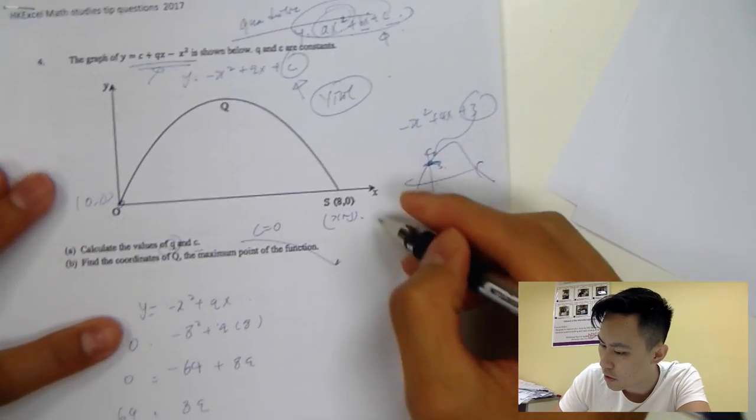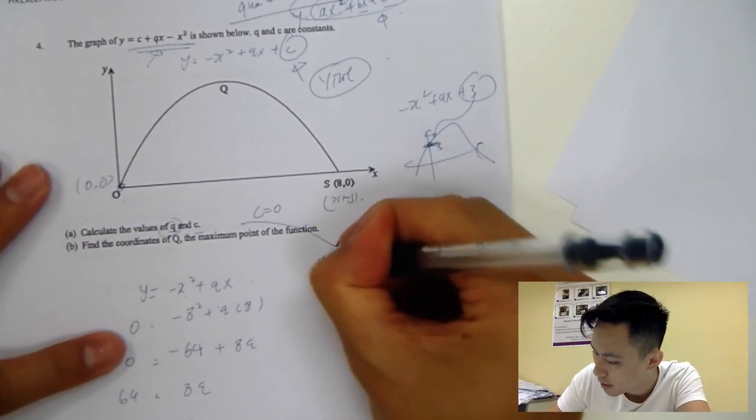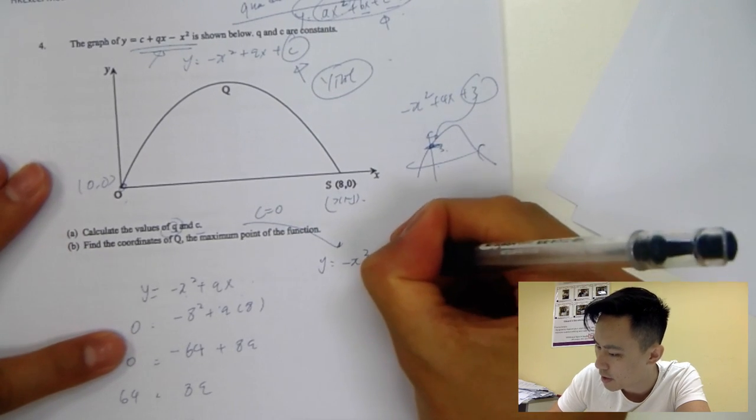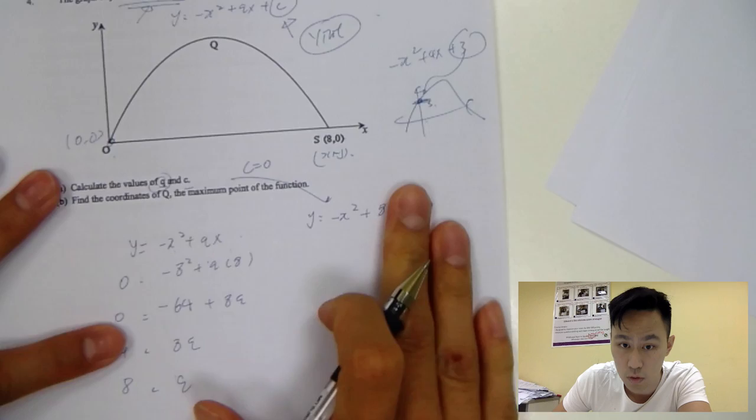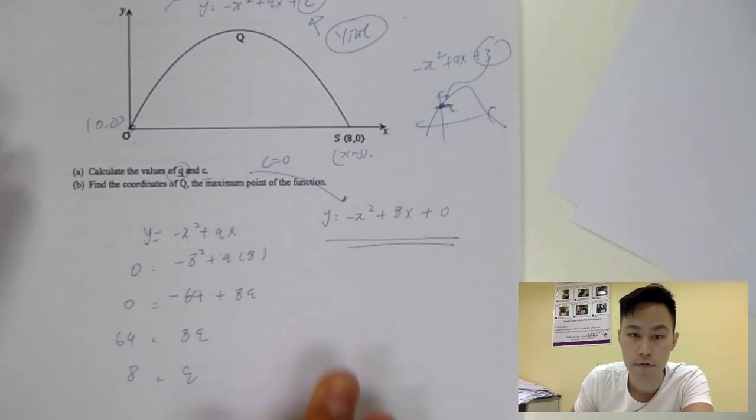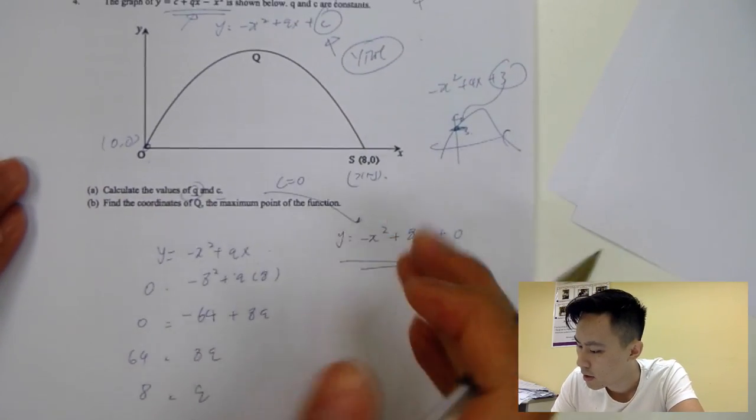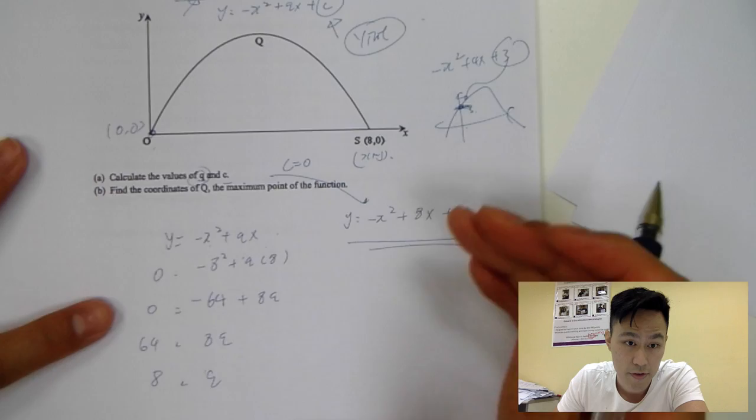So finally, we just rearrange that. We just rewrite the equation again: minus x squared plus 8x and then plus 0, or you can ignore the 0. So this is a very typical quadratic equation question in the math study exam.